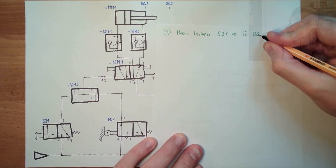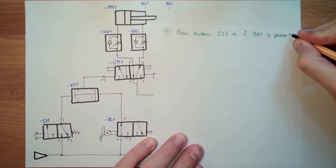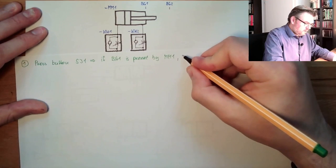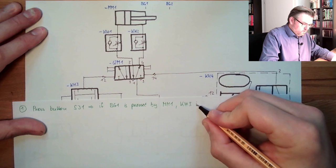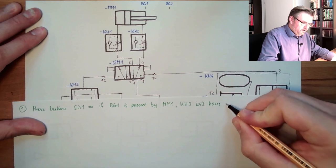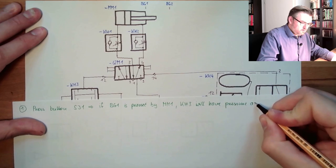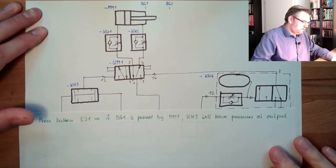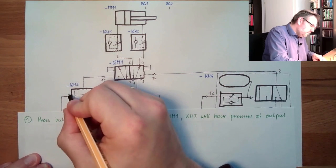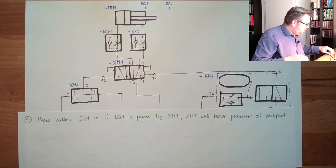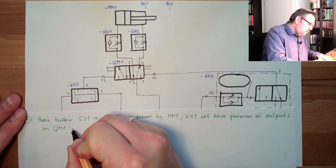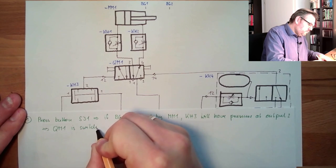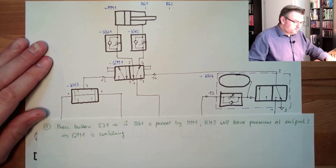The two pressure valve here applies pressure to QM1. So the first thing which is happening: press button SJ1. If PG1 is pressed by MM1, KH3 will have pressure and output. See here, just notice, I've forgotten to label this. So these are the one connectors and this is the two connectors. So at the two connectors of KH1, there is pressure.